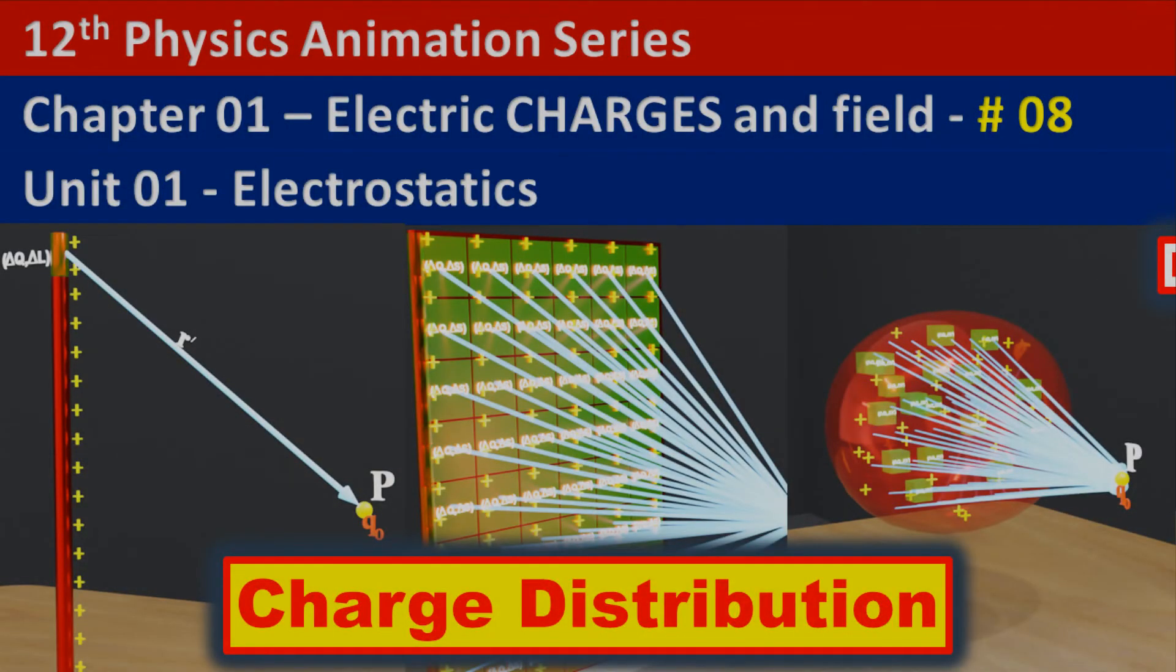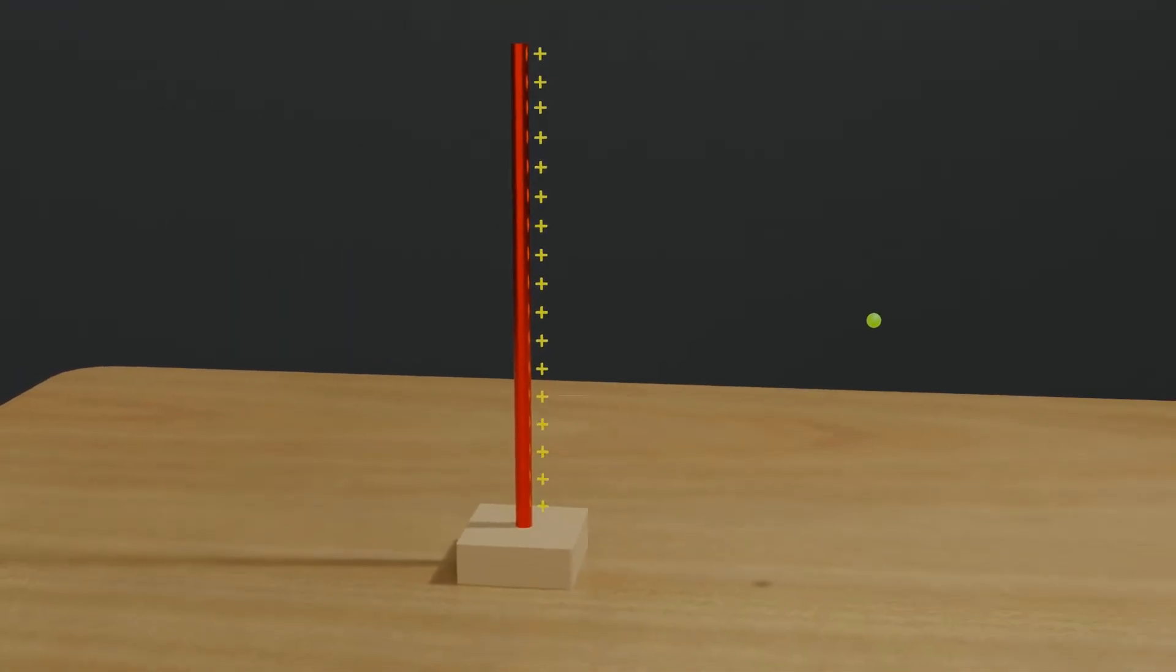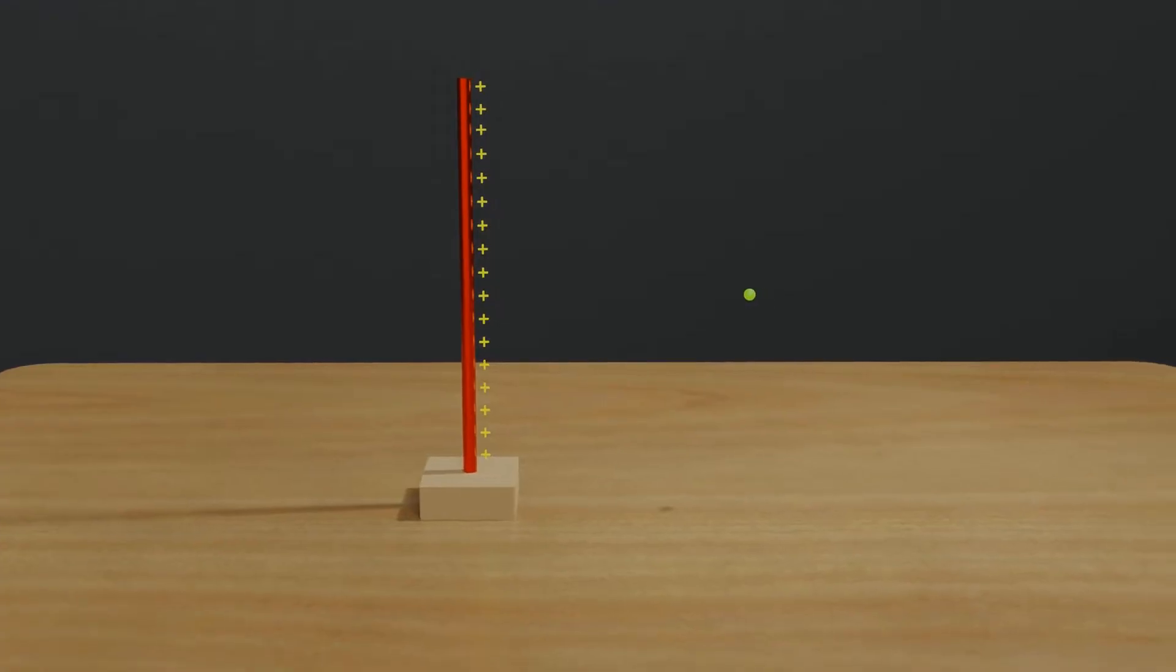Hello friends, welcome back to physics and animation. So far, whenever we talked about forces or electric fields between charges, we have considered charges as point charges. But what if we want to determine the intensity of the electric field at a point due to a charged wire? Because Coulomb's law is only valid for point charges, we cannot apply it for charged wire. So let's start by understanding charge distribution.